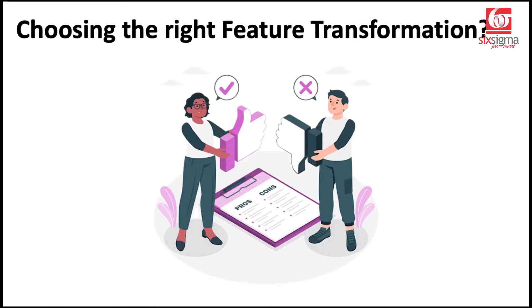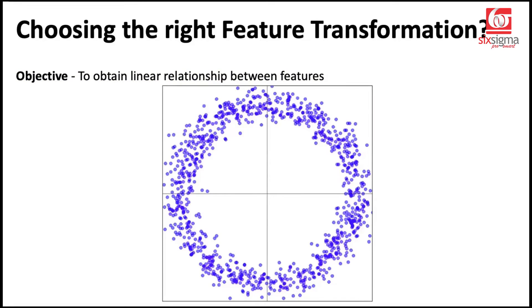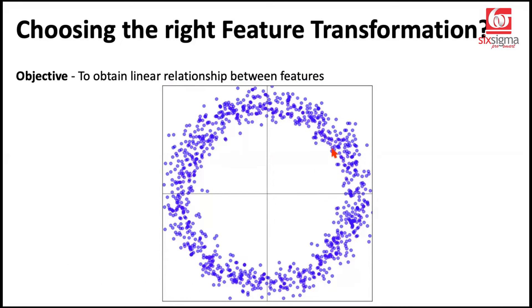So how do we choose the right feature transformation? With the first objective, that we want to obtain linear relationship between the features, do we have some guidelines, some rules of thumb? Yes. So let's say we look at this data, which is circular, and we've divided it into four quadrants. Just like in coordinate geometry, we have four quadrants in the Cartesian plane. This is what it is. And let's identify them differently with different colors.